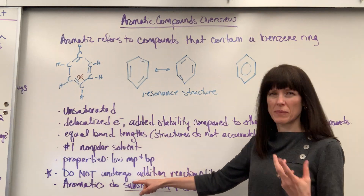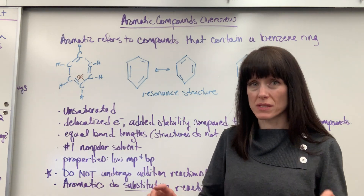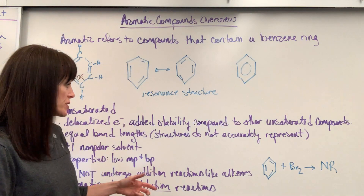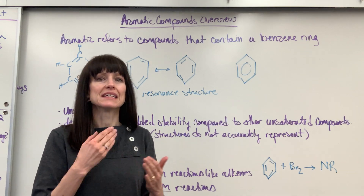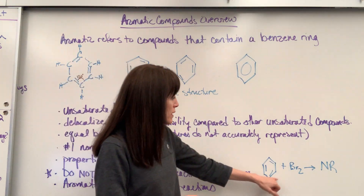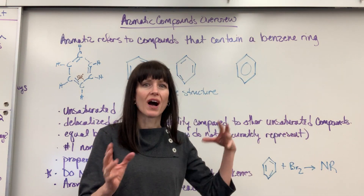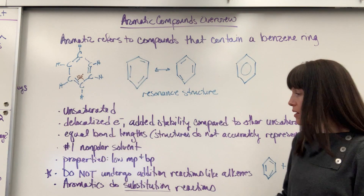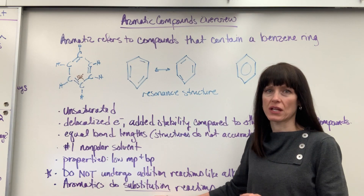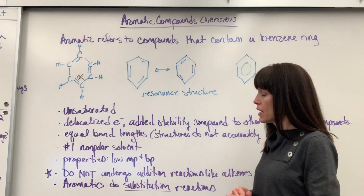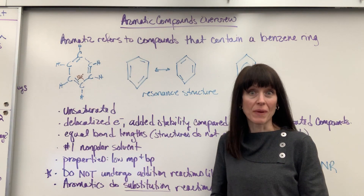This is the most important thing to know in organic chemistry: aromatic compounds — benzene — do not undergo addition reactions. Alkenes, when you have those double bonds, undergo addition reactions. However, aromatic compounds with that resonating double bond do not undergo addition reactions. For example, adding bromine to a benzene ring — no reaction. Aromatic compounds do what are called substitution reactions, and there's a whole list of substitution reactions that aromatic compounds can do.